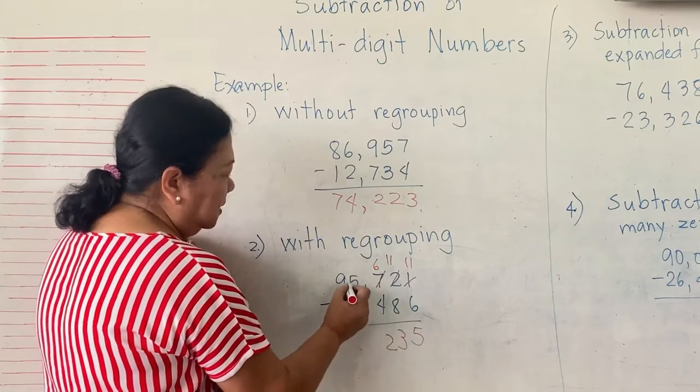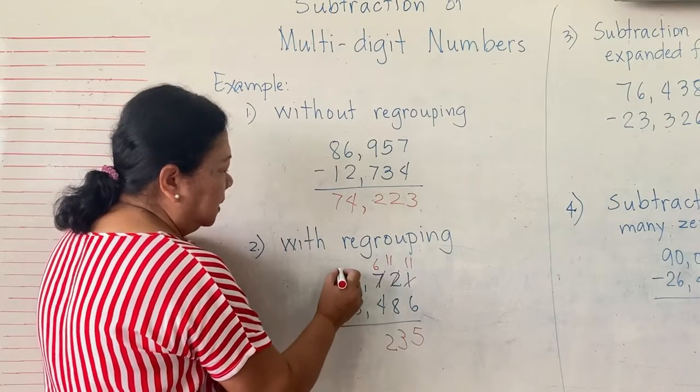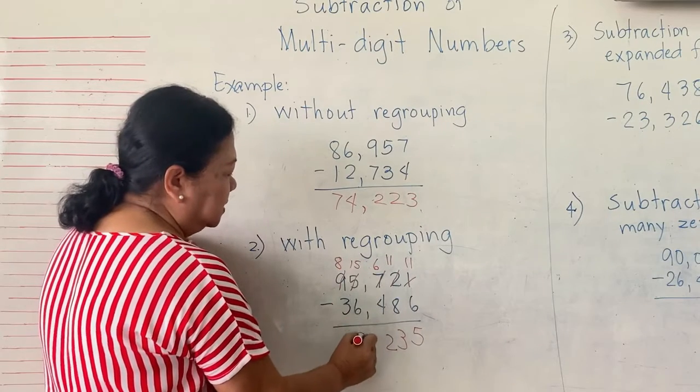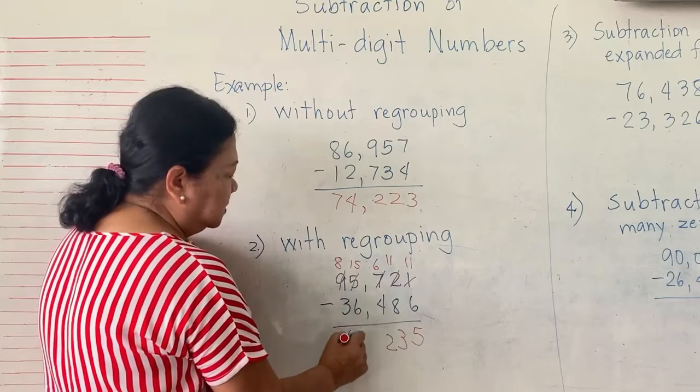5 minus 6 cannot. 5 will borrow 1 from 9. 9 will become 8. 5 will become 15. 15 minus 6 is 9. 8 minus 3 is 5.